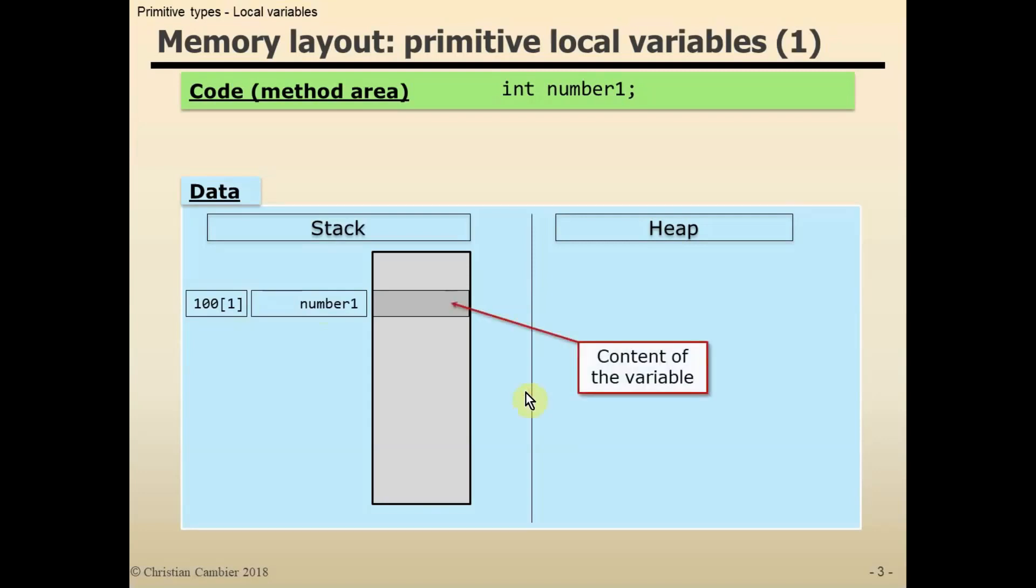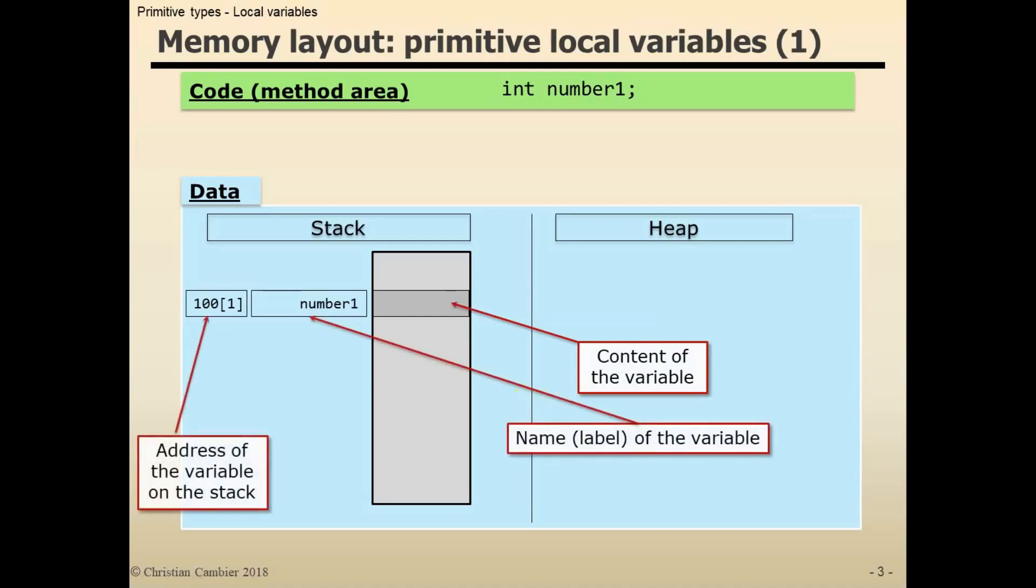This is the content of the variable. This is the name or label of the variable. And this represents the unique address.